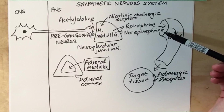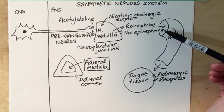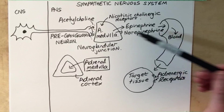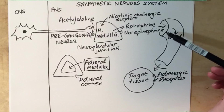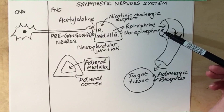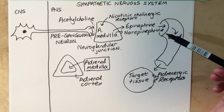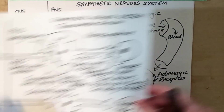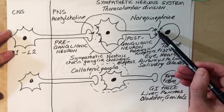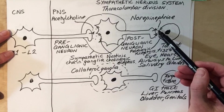The other point I want to make is that because norepinephrine is released from the adrenal medulla into the blood supply, it does act as a hormone. But in the previous two diagrams where norepinephrine was released from the axon terminal of postganglionic cells, here it is functioning as a neurotransmitter.